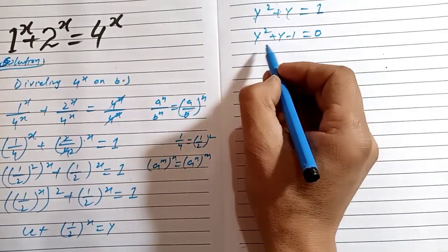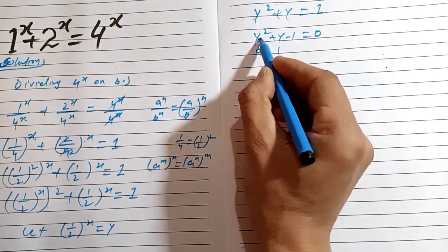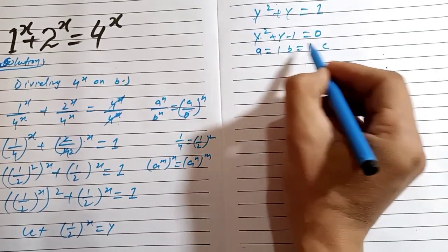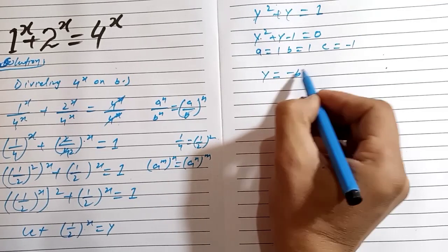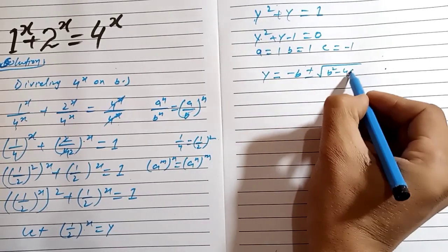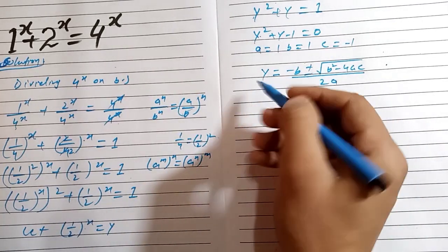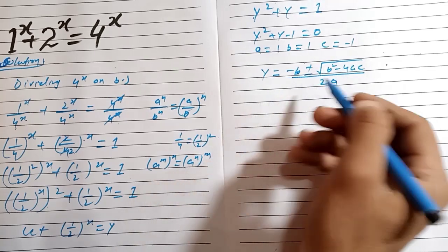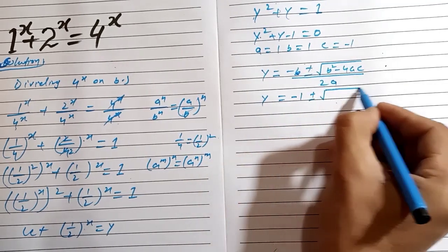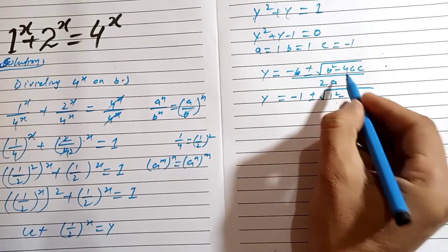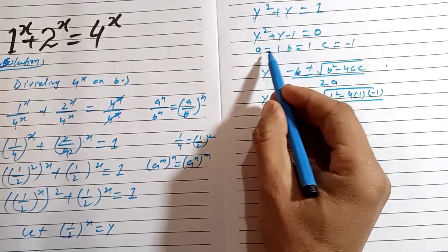In the quadratic equation Y² + Y - 1 = 0, we identify A = 1, B = 1, and C = -1. The quadratic formula is Y = (-B ± √(B² - 4AC)) / 2A. Substituting these values: Y = (-1 ± √(1² - 4·1·(-1))) / (2·1).